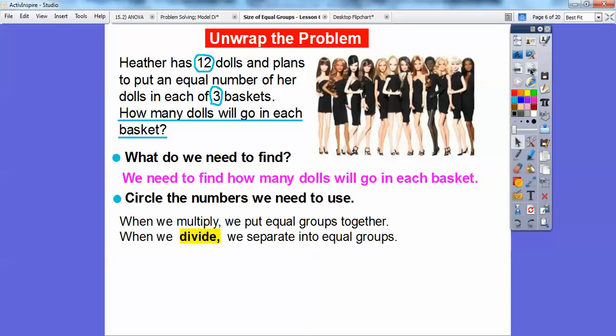So how we're going to model this is with some counters here. So when we multiply, we put equal groups together and then when we divide, we separate them into equal groups and that's what we're going to do here, using counters and circles and squares. So we can divide to find the number in each group, so that's what we're going to try.